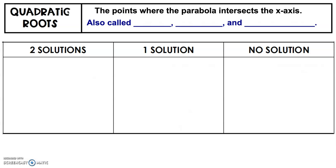Roots of a quadratic — or really any function — are where the parabola or function intersects the x-axis. These points where they cross the x-axis are called roots. We also know them as x-intercepts, solutions, and zeros. All of those names mean the exact same thing as roots, and we know how to look for those on a graph.